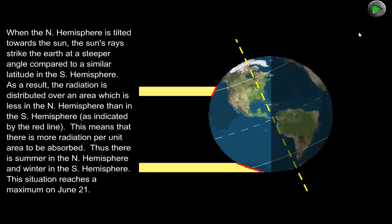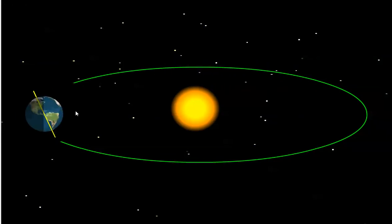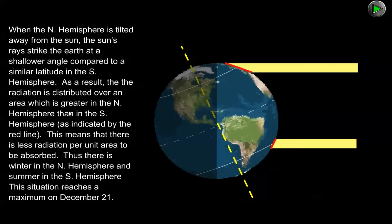The situation during northern hemisphere winter is just the opposite. During the northern hemisphere winter, the sun angle is low in the northern hemisphere and the light is spreading out over a larger area, so the heating power of the sun is reduced because the northern hemisphere is tilted away from the sun and the light is coming in at a low angle.